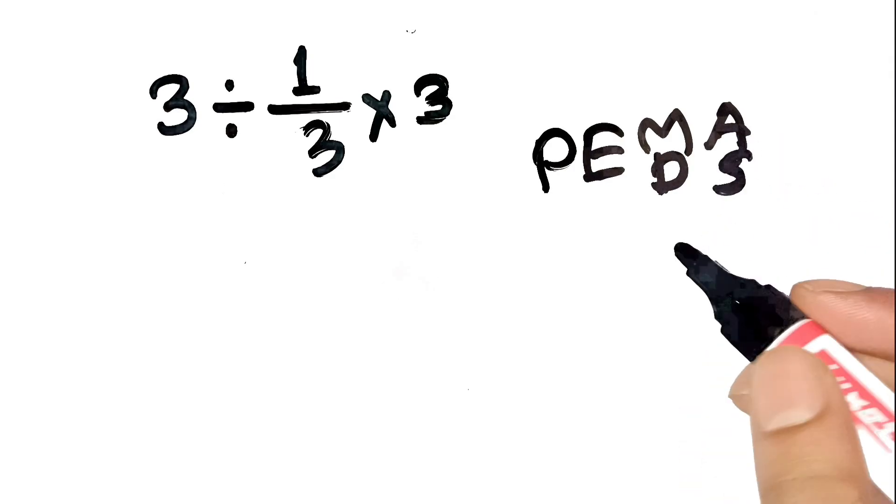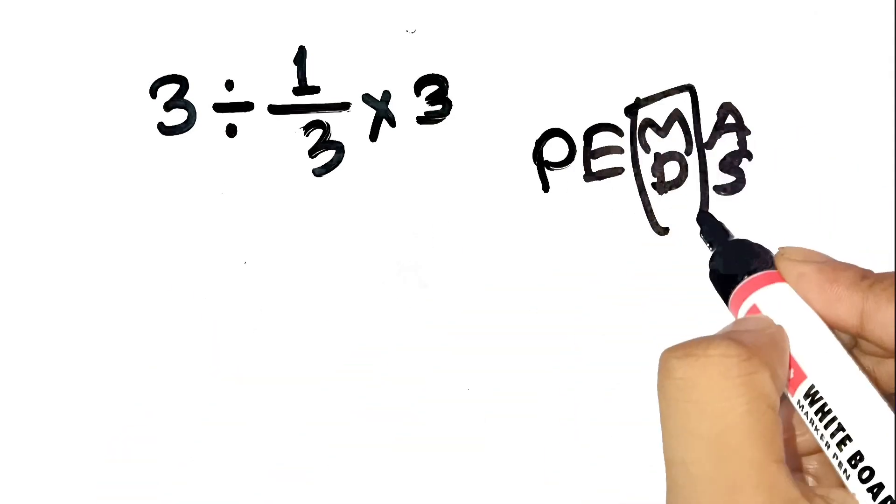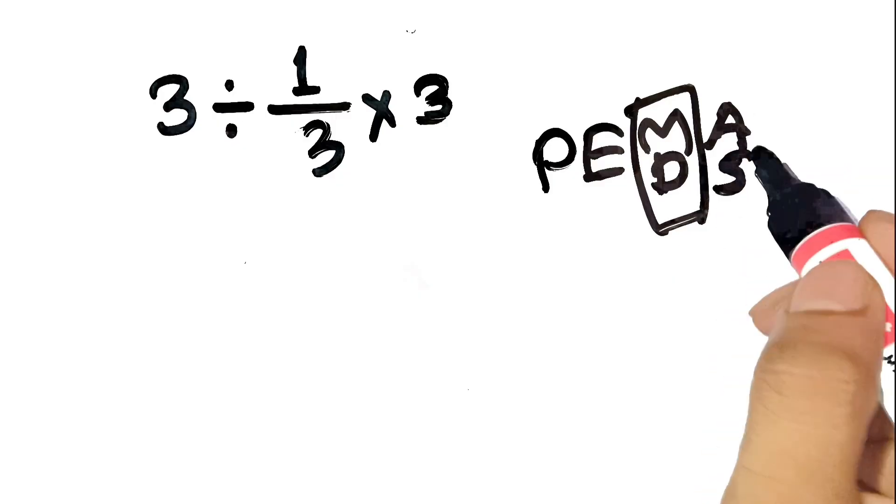And here's the key. Multiplication and division are equal priority. So we solve them from left to right.